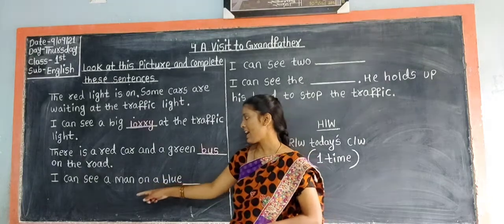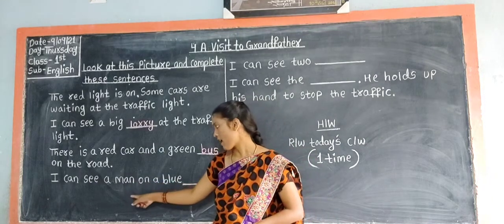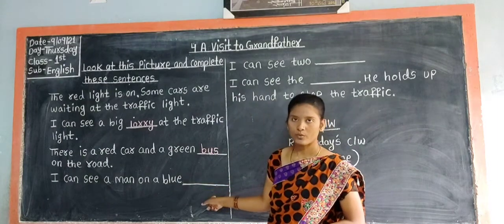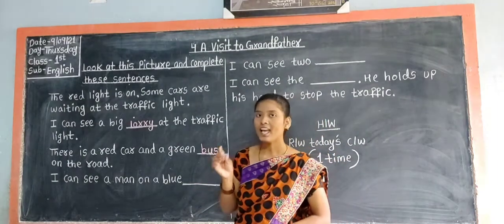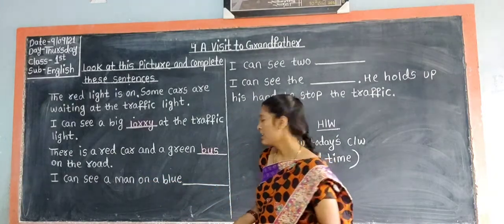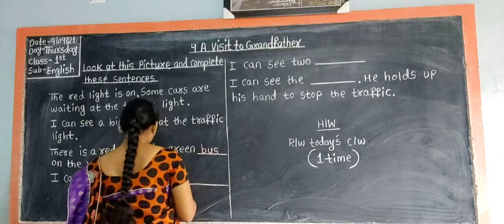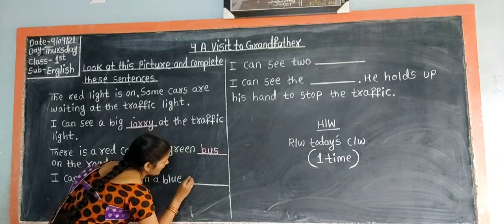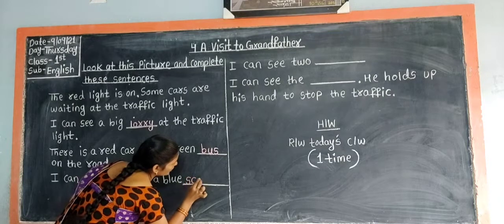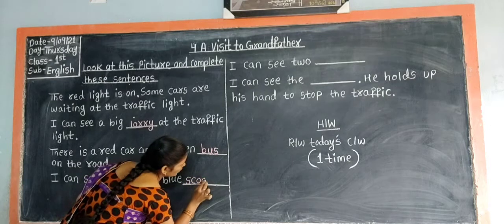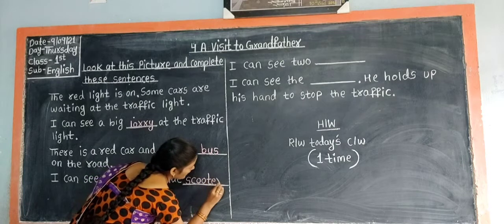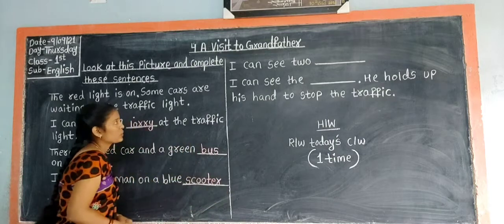'I can see a man on a blue ___.' You can see a man on a blue scooter. So write 'scooter' in the blank. S-C-O-O-T-E-R. Scooter.